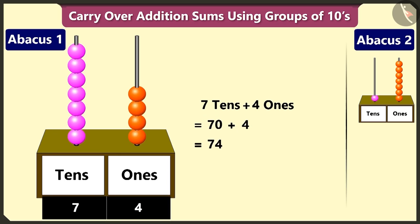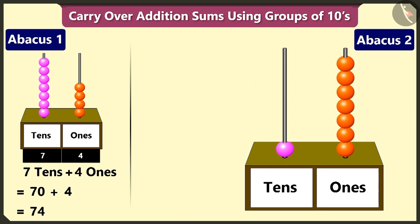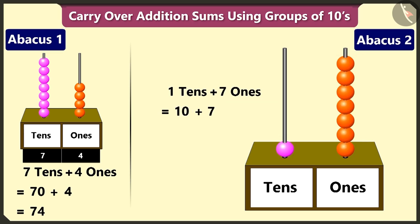Well done. And in the second abacus, in the tens box, there is one bead. This makes it one ten. In the ones box, there are seven beads, that is seven ones. So adding one ten and seven makes seventeen.